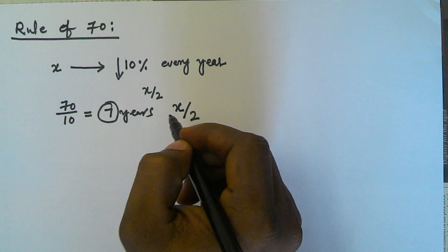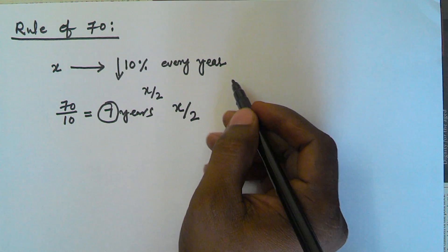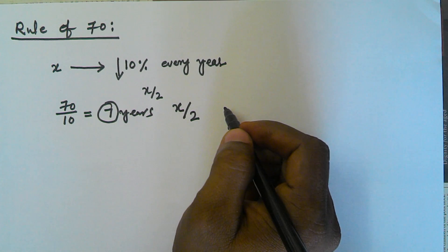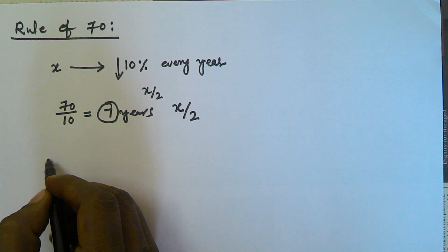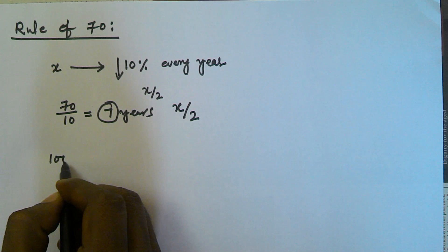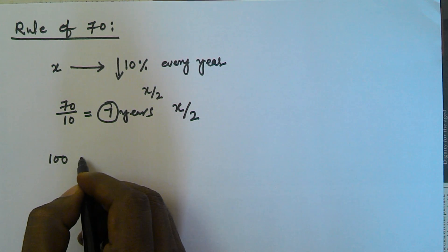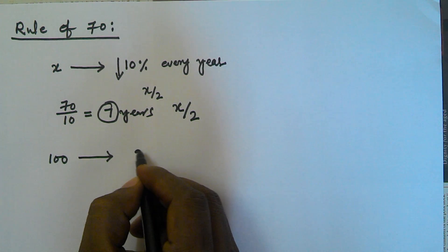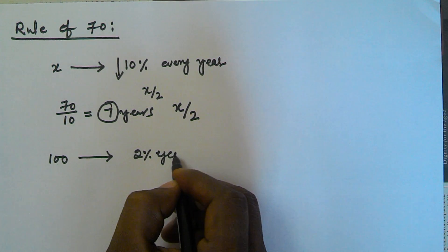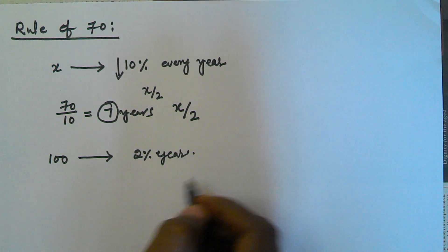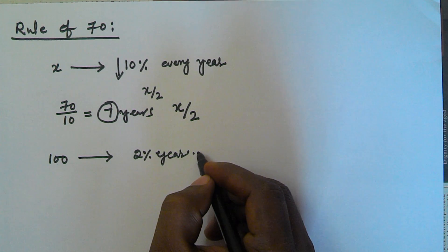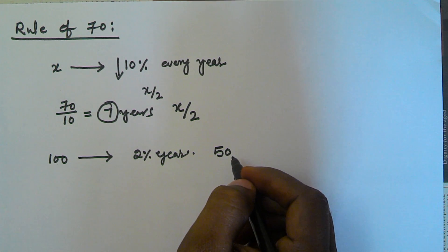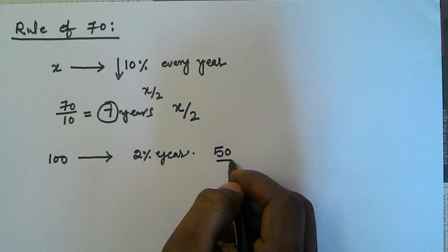So the Rule of 70 is used to find after how many years the efficiency of a machine is reduced by 50%. For example, the current efficiency of a machine is 100% and that efficiency is reduced by 2% every year. After how many years will that efficiency become 50?